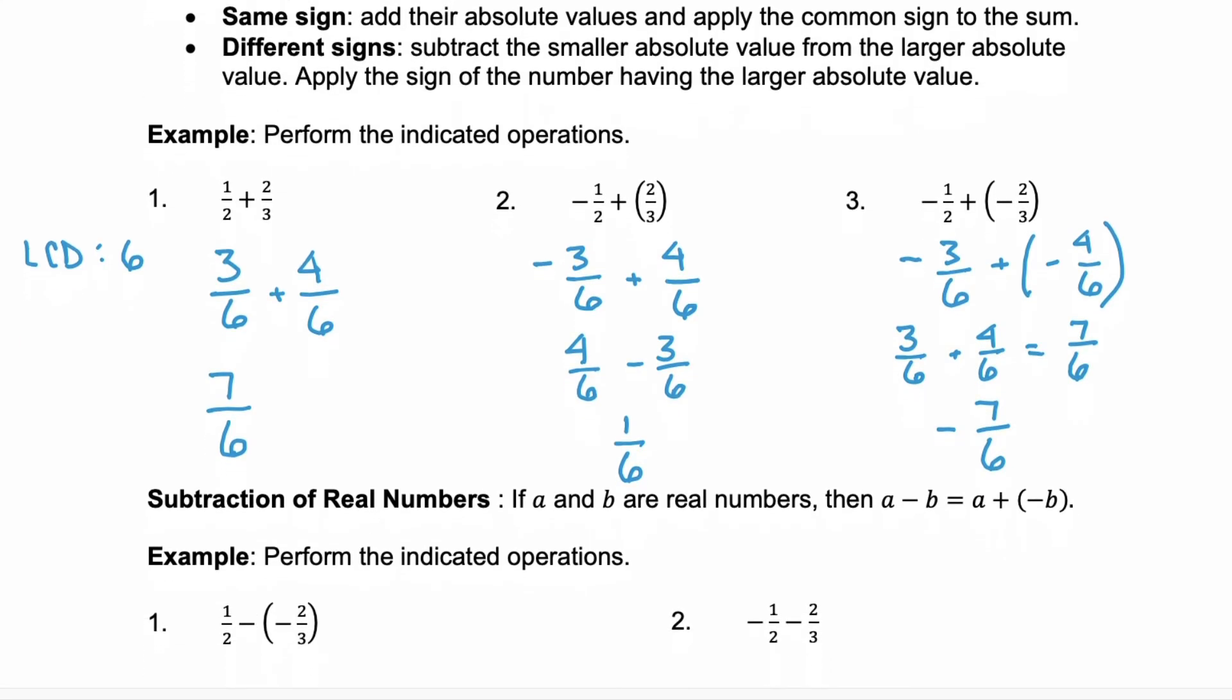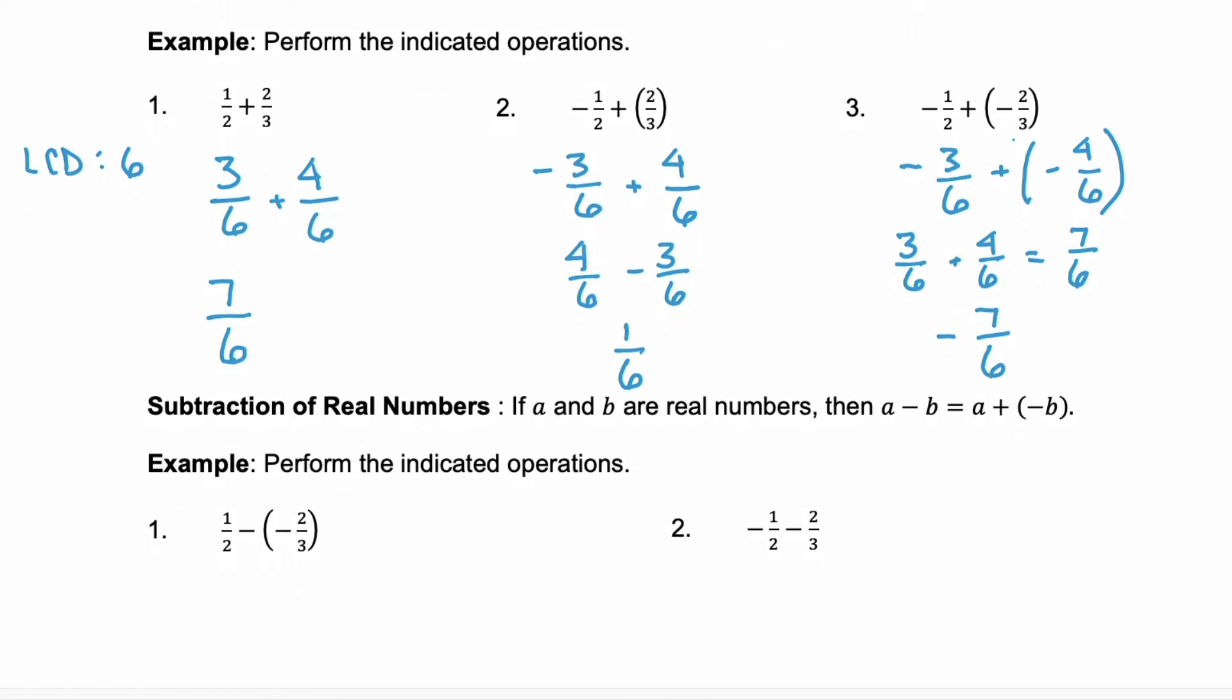Now, look at what we did in example 3 and this definition of the subtraction of real numbers. If a and b are real numbers, then a minus b is the same as a plus negative b or a plus the opposite of b. That's exactly what we were doing above.